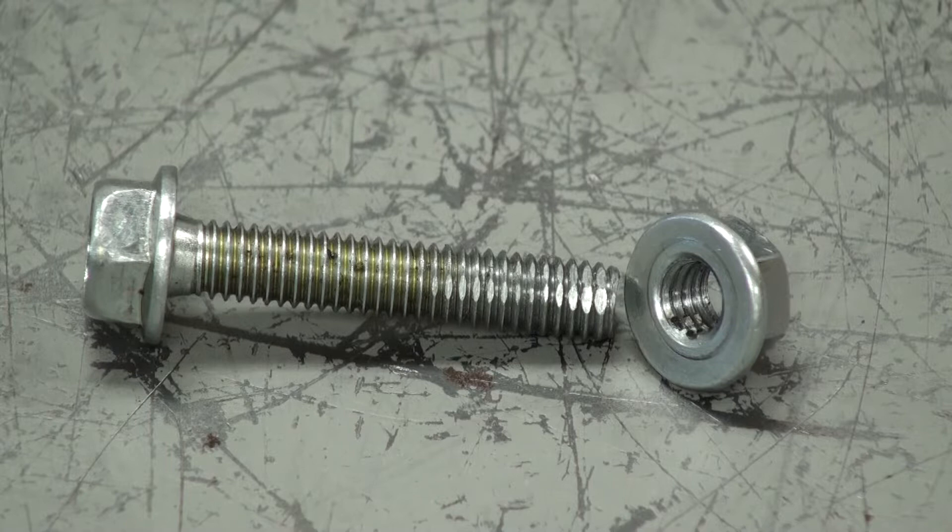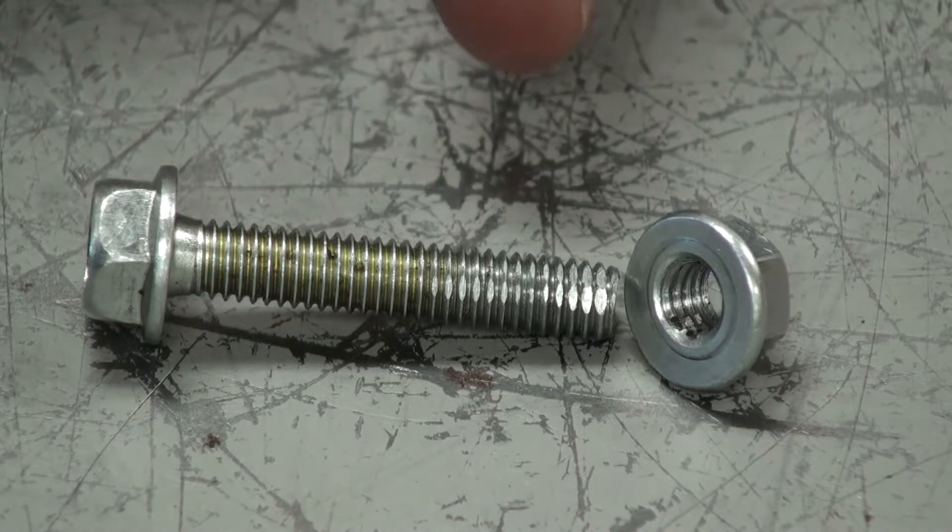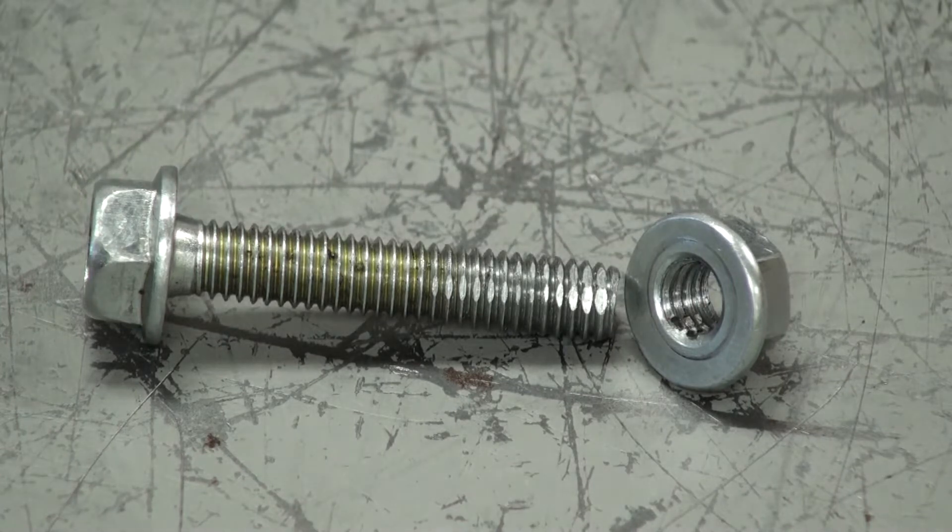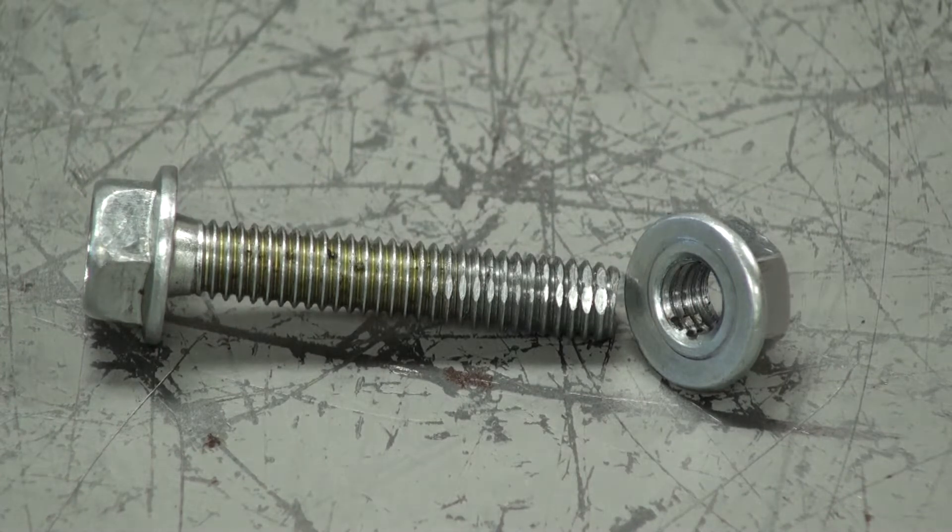This is the bolt and nut that we're going to try to fix in this video. As you can see, the threads are damaged on both the bottom of the bolt and the inside threads on the nut. We'll be using a tap and die to fix these threads.